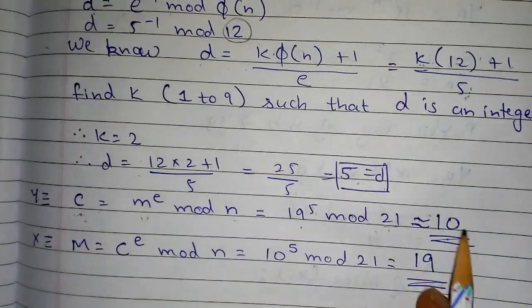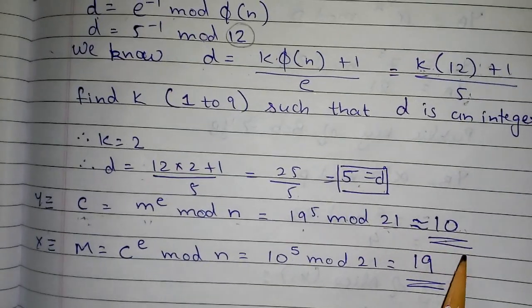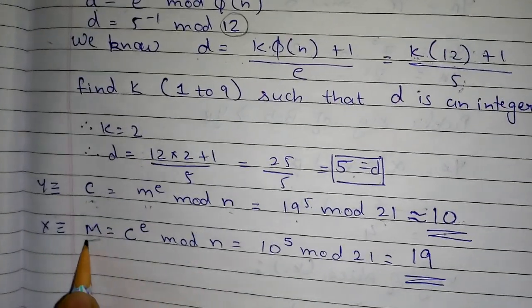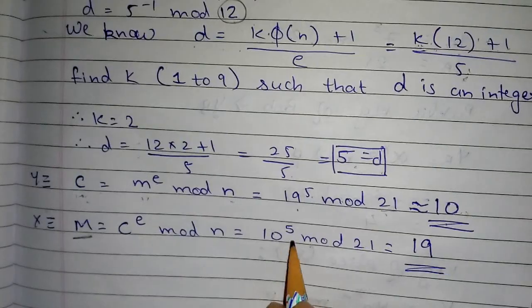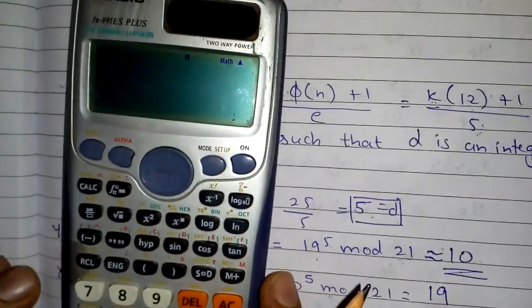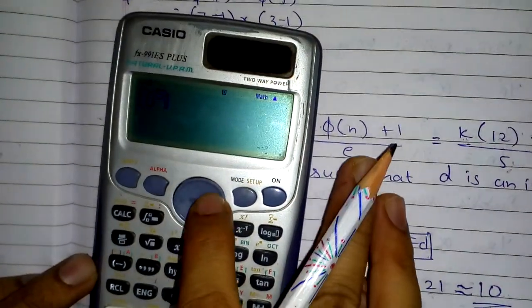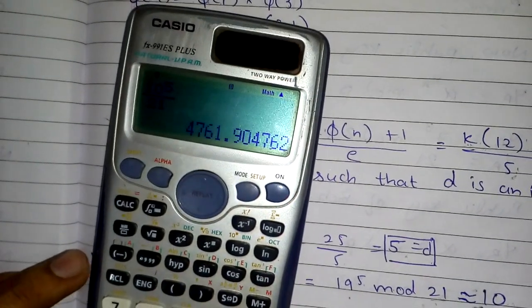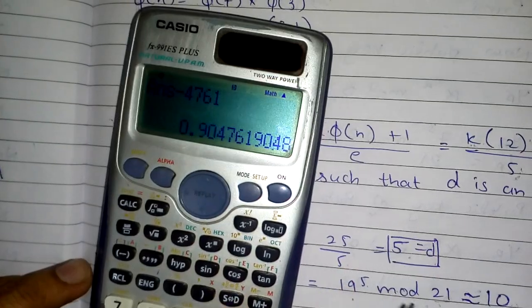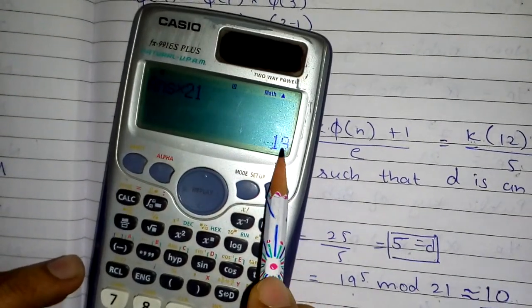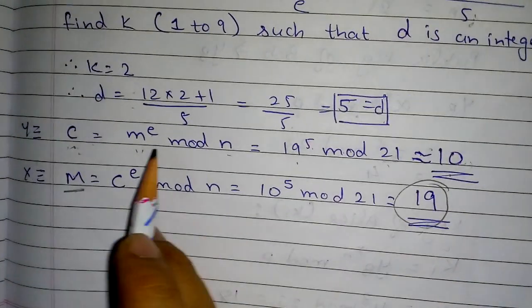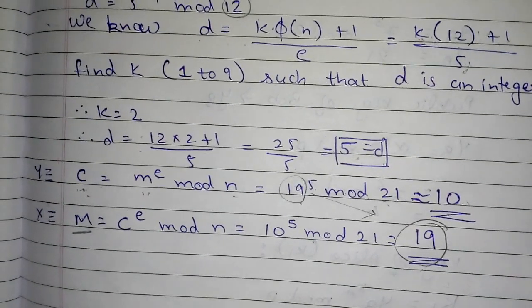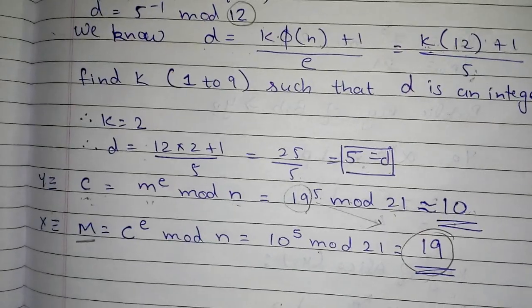Now we need to decrypt to get the final message. M = C^D mod N = 10^5 mod 21. 10^5 = 100,000. Dividing by 21, we remove 4761 complete cycles and get remainder 19. So we have successfully decrypted the message back to M=19. This demonstrates RSA public key cryptography. Thank you, see you in the next video on Diffie Hellman.